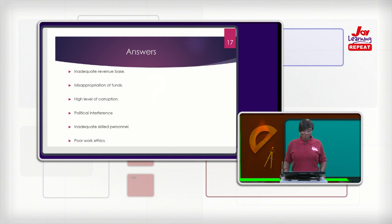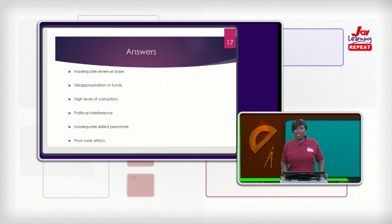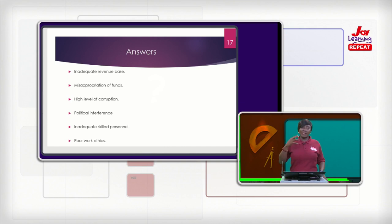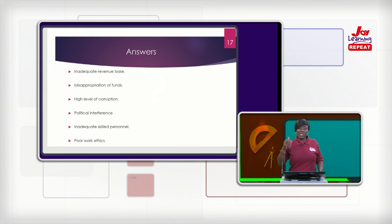Then there is inadequate skilled personnel. One challenge the district assemblies face is that square pegs are put into round holes, making work quite difficult and not giving the assemblies their best. They should have their own auditors, their own accountants, their own secretaries — everything as a package — so that there is efficiency and development at the grassroots level. There should be a proper system where skilled personnel who have studied and have experience with what it entails to be part of the district assemblies are employed for competent and efficient running of the assemblies.